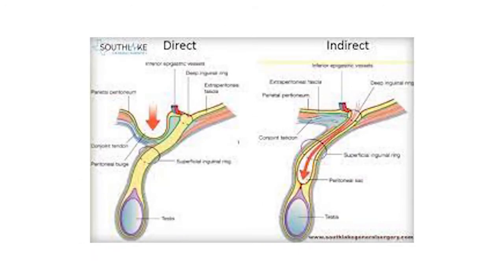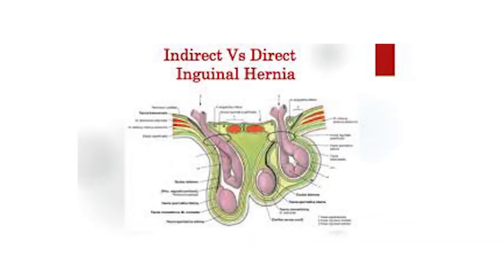Here is a typical picture differentiating both types of hernia — direct and indirect. You can see clearly the direct sac emerging from Hesselbach's triangle, and the content going through the deep inguinal ring. The same image shows the differentiation between indirect and direct inguinal hernia.